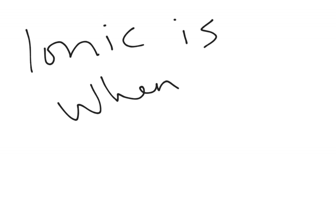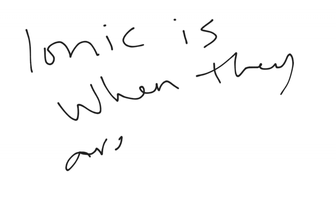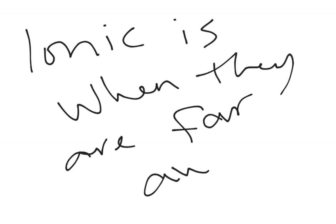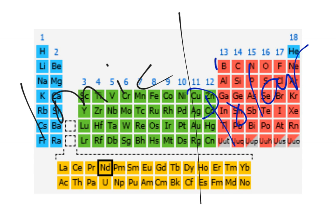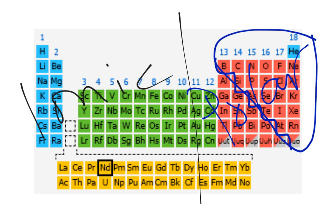Ionic is when they are far away. Where's the cutoff line? Where do we say this is ionic and this is polar? Going back to our periodic table, that cutoff line is right there. If I have two on this side of that line, it is polar. If I have one over here and one over here, it is ionic.